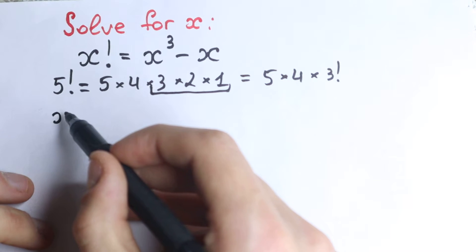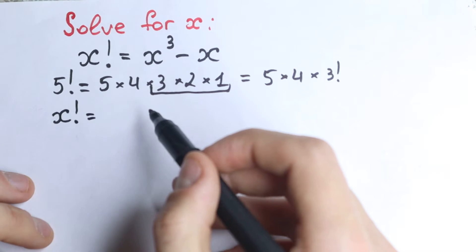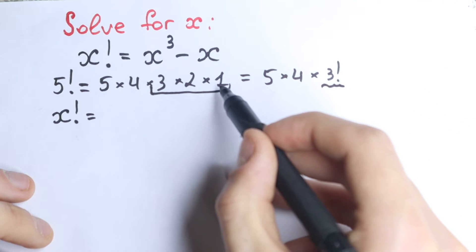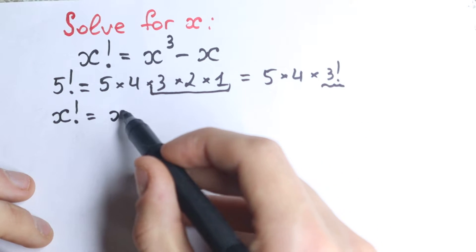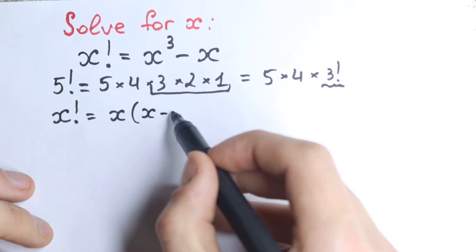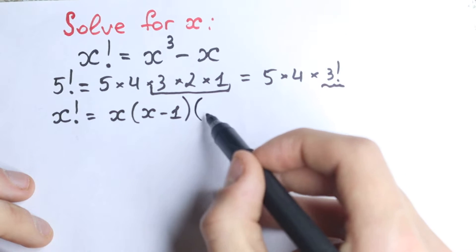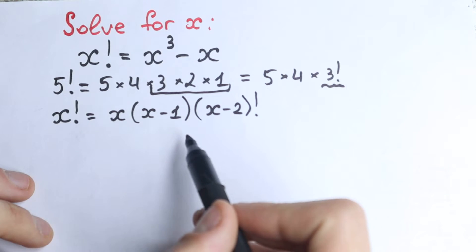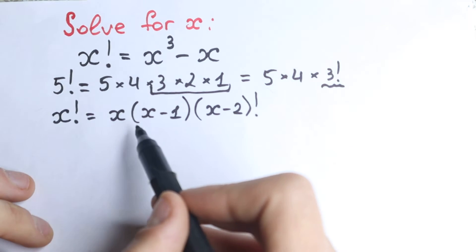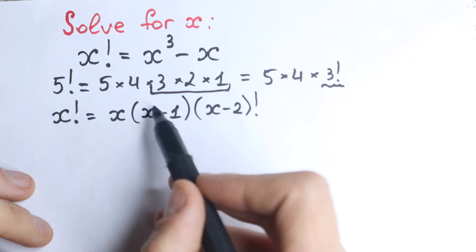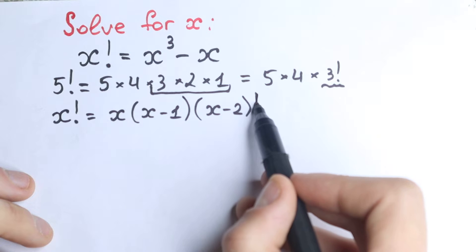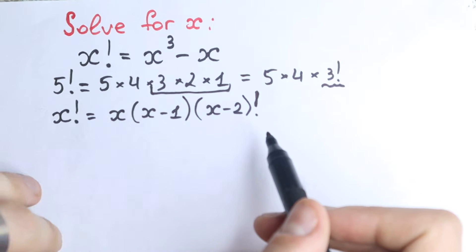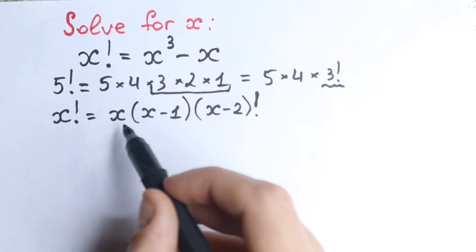So we have x factorial equal to — as you can see, we can write the two previous elements and keep the factorial with the last one. So we can write it as x times (x minus 1) times (x minus 2) factorial. Just as in the example we have 5, 4, and 3 factorial — the bigger element, then the lower one, keeping the factorial sign, which is really important. I hope you understand this explanation.